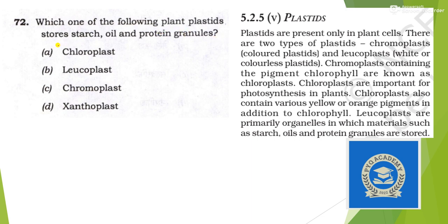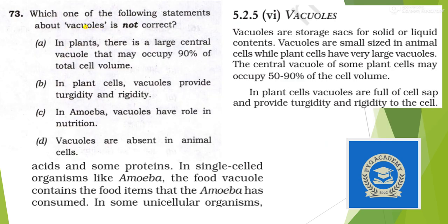Next: which plant plastids store starch, oil, and protein granules? From the cell chapter of class 9: leukoplasts are primarily organelles in which materials such as starch, oil, and protein granules are stored. Answer is option B — leukoplasts.